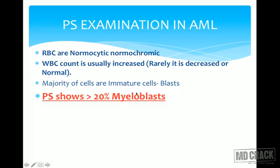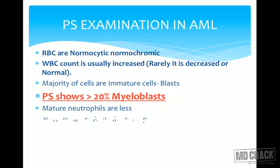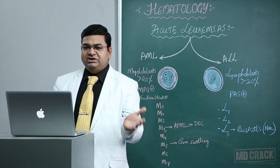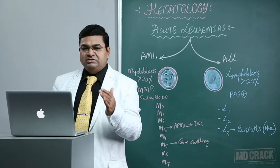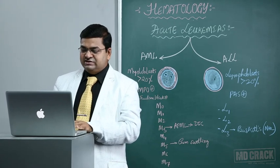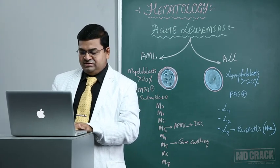Most importantly, the majority of cells are blast — you should see more than 20% myeloblast to diagnose AML. Mature neutrophils are very few, causing neutropenia, which makes patients susceptible to infections. Morphologically, the pathologist classifies the blasts from M0 through M3 and beyond based on their morphological appearance.